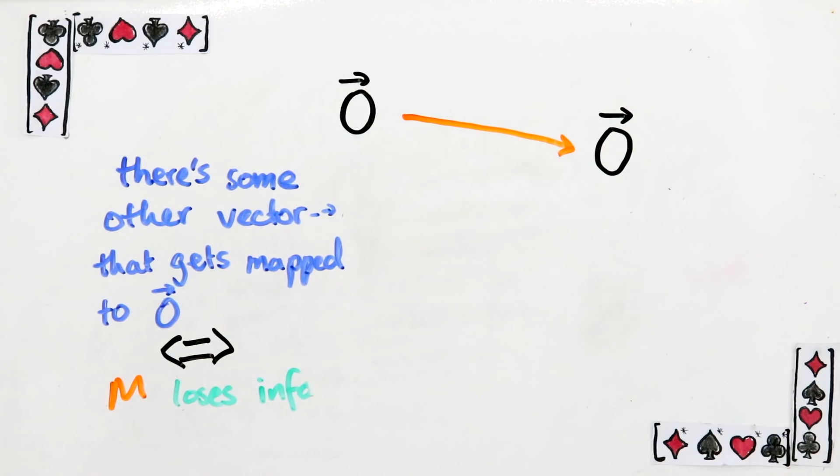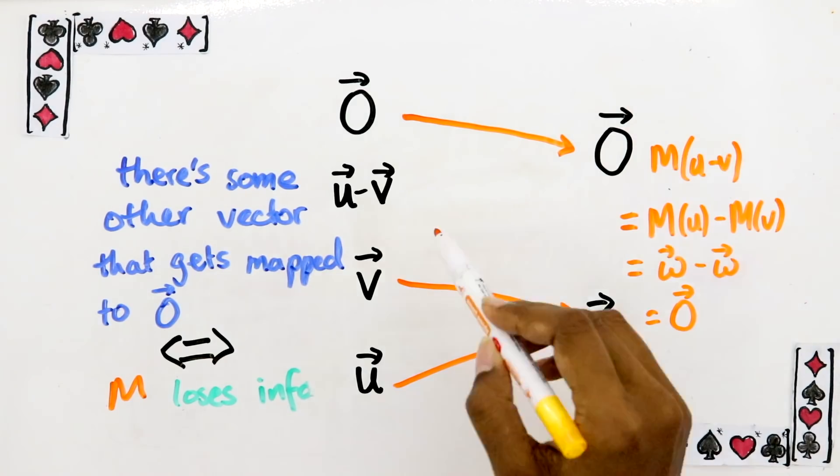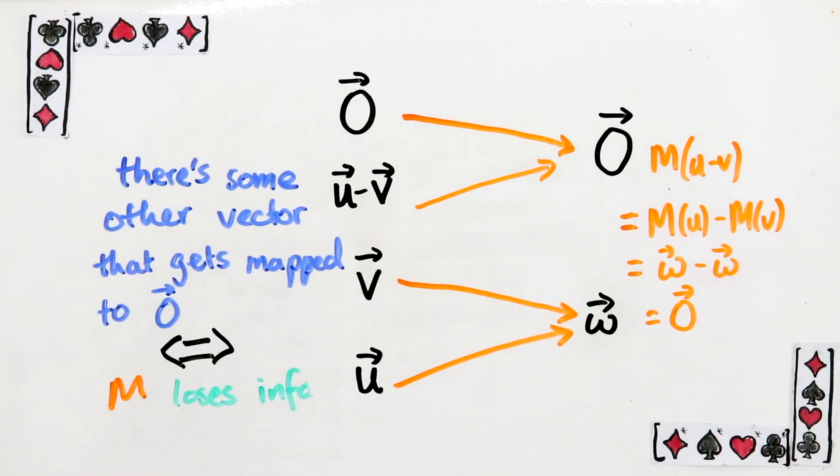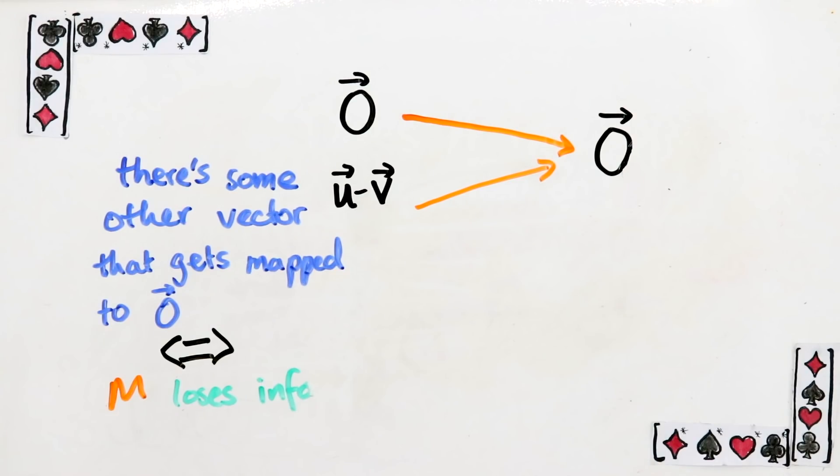Why would that be enough? Imagine two vectors U and V both go to W, so M loses information. Then the vector U minus V, by linearity, gets mapped to 0. So whenever you have two vectors going to the same thing like this, you always get at least two vectors ending up at 0. So you can check whether a matrix loses information by just checking how many things go to 0.